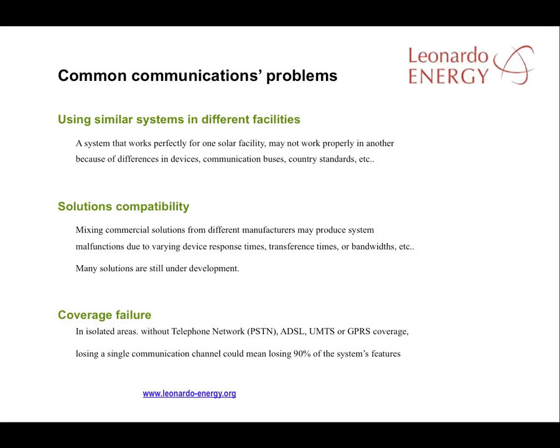Most problems we find in communications in the PV facility come from failed attempts to use the same communication system in different facilities, the incompatibility of solutions at different facilities, and coverage failure. A system that is working properly in one solar facility might not work in another because software may differ when different aged versions are used. The protocols in different countries might also be different; for example, some monitoring equipment may not work in Spain as Spain uses a different protocol to the rest of the world. Sometimes mixing different solutions from different manufacturers may produce system malfunctions. And particularly where the monitoring or remote control of a plant is dependent on cell phone communications, failures in network coverage can have devastating effects.